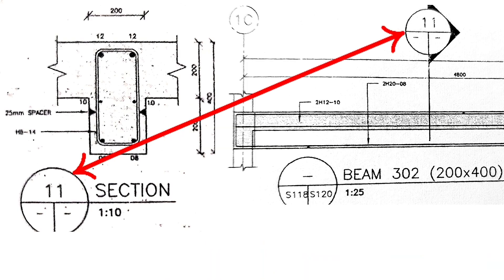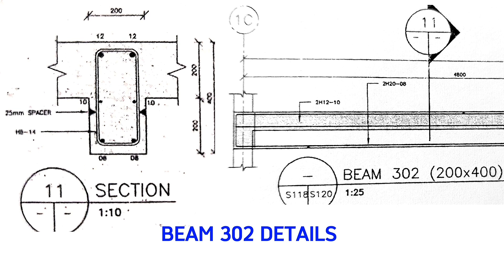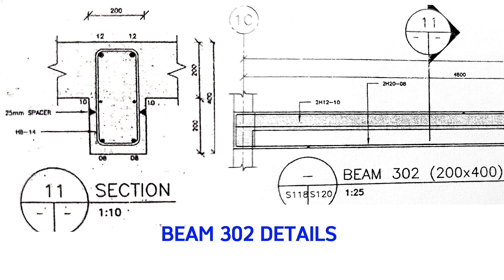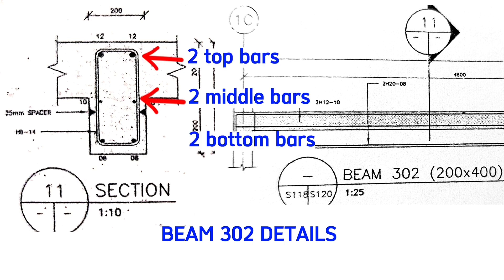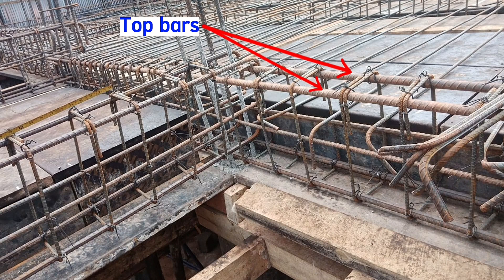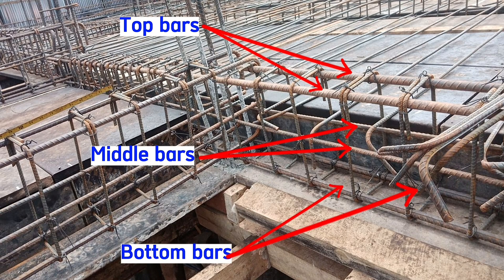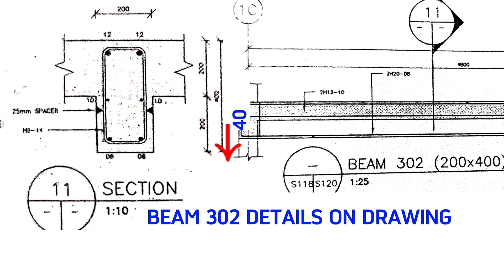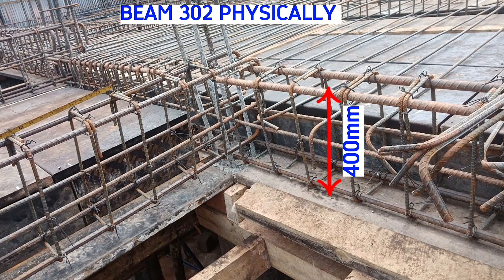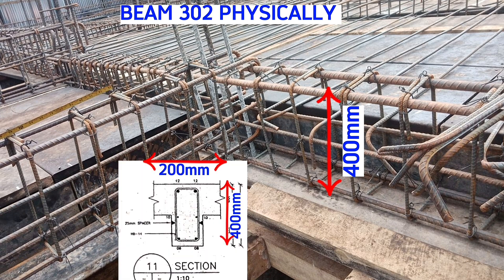Section 11 shows this beam from grid line C up to grid line D. This beam has three rows of bars: two top bars, two mid row bars, and two bottom bars. Beam 302 is 400 millimeters in depth and 200 millimeters wide, matching the physical dimensions shown.